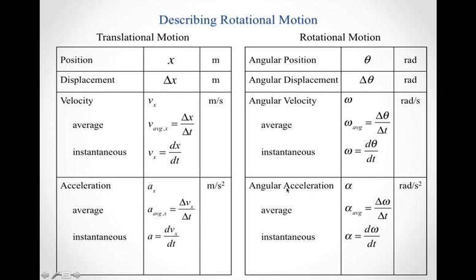Angular acceleration plays the same role — it tells you how the angular velocity is changing. On average, it's delta omega over delta t. Or, if you know omega as a function of time, taking the derivative of omega with respect to time gives you a function describing the instantaneous angular acceleration alpha. The units for angular acceleration are radians per second squared.